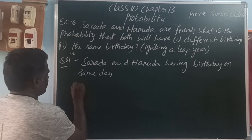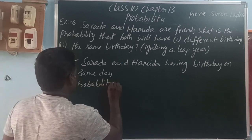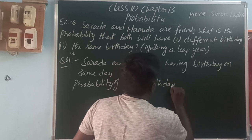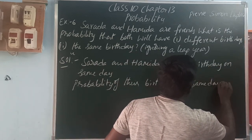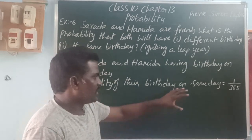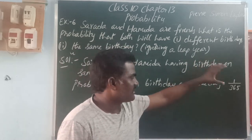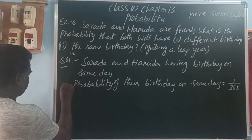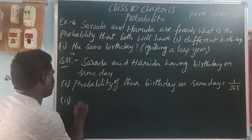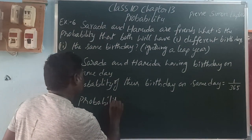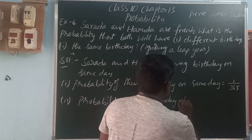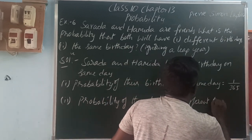So, the probability of their birthday being on different days — that means Sardah is born on one day and Hamidha is born on another day. So, probability of their birthday being on different days: suppose Sardah's birthday is 1 by 365 days.